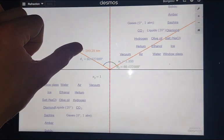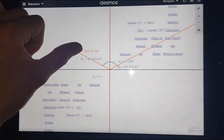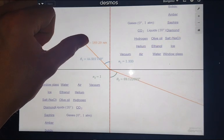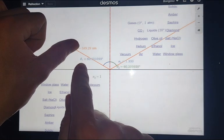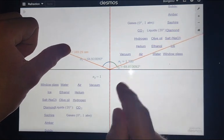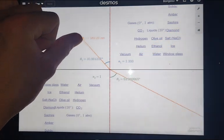It can also do total internal reflection, so once it's past the critical angle you see it switches to the law of reflection instead of Snell's law, and we get our angle of incidence and our angle of reflection, which are of course the same.